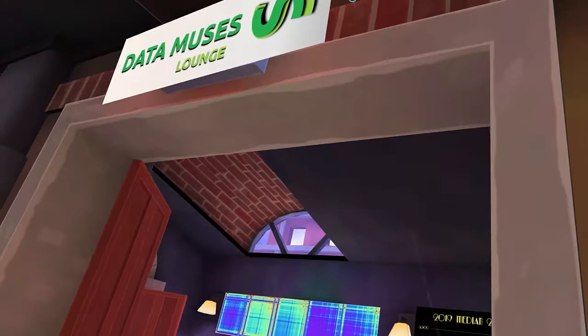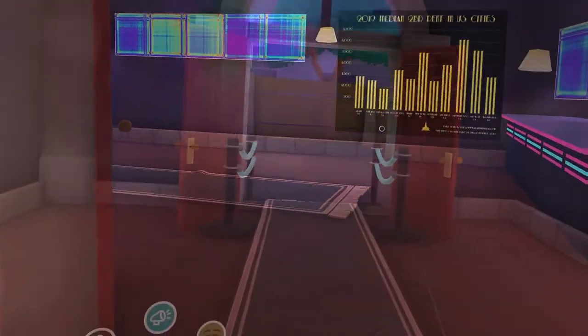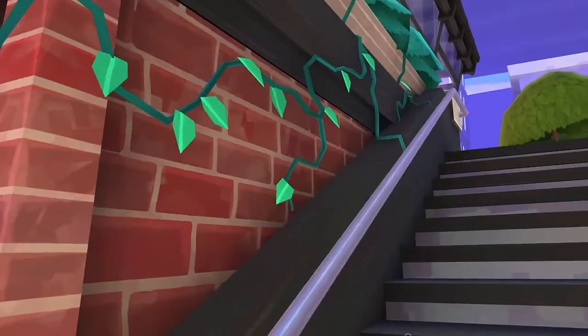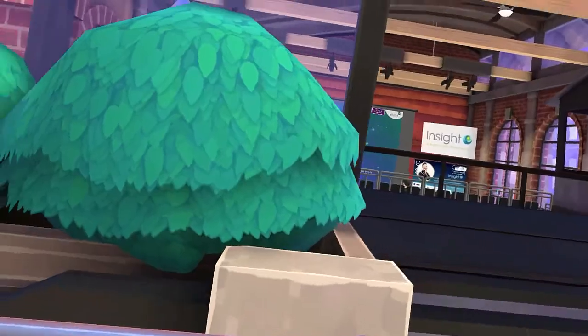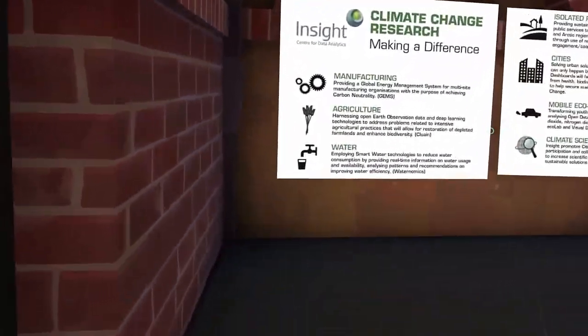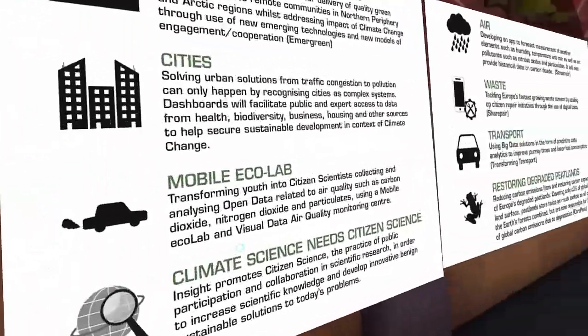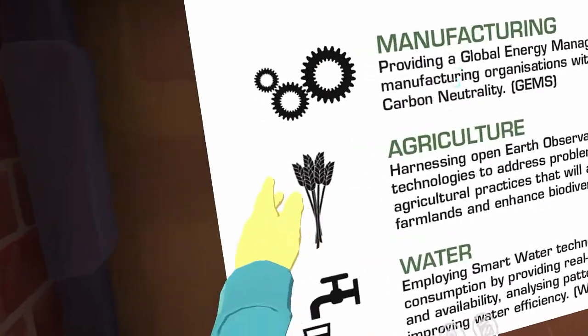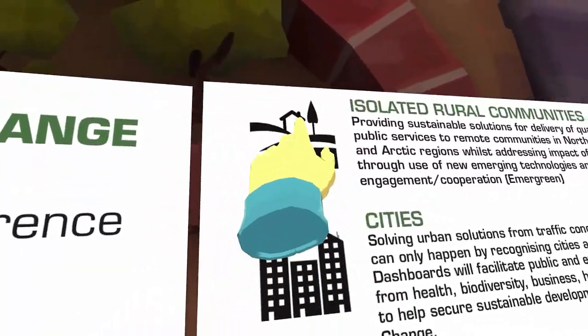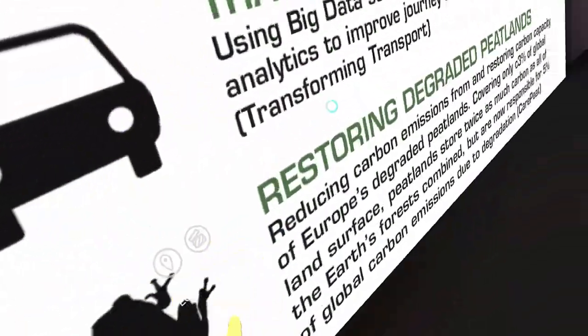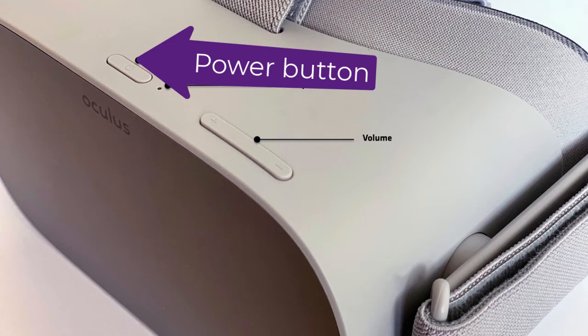Participants will be brought to the Data Muses lounge to look at and comment on the displays. A flight of stairs will then bring you to the final destination: the research gallery, which contains a series of posters outlining internationally acclaimed collaborative work by Insight personnel in areas such as climate change, smart cities, manufacturing, agriculture, water, air, waste, transport, and restoring degraded peatlands. When the tour ends, the guide will ask everyone to exit by pressing and holding the power button on the headset until a shutdown menu appears. Point at the power-off option and press the trigger. The message 'Powering down' should appear — wait until the screen goes blank before removing the headset.